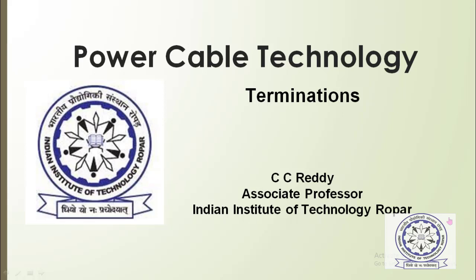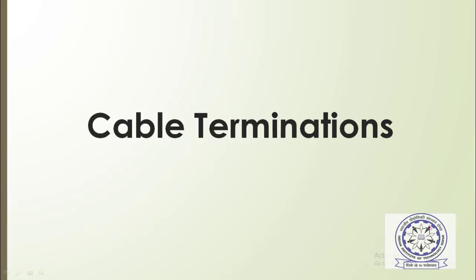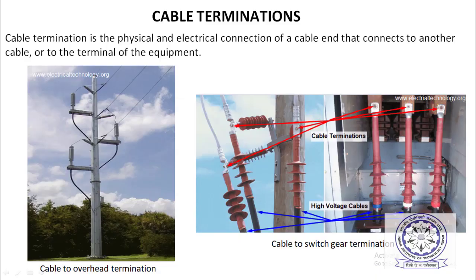In this class we will learn about terminations in power cables. Cable termination is the physical and electrical connection of a cable that connects to another cable or to the terminal of the equipment.